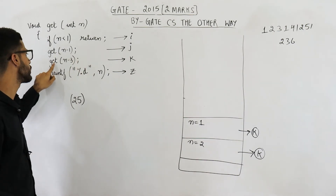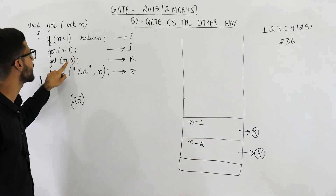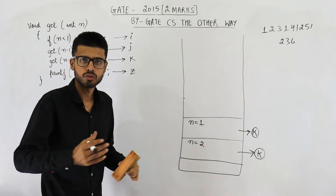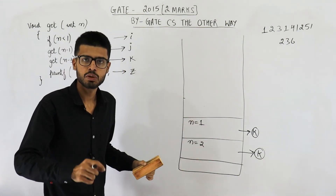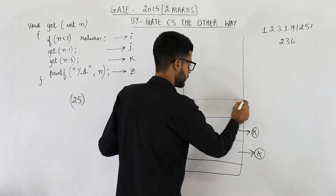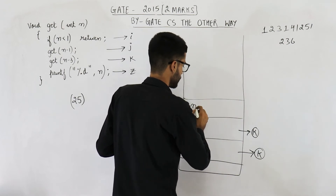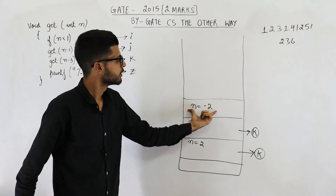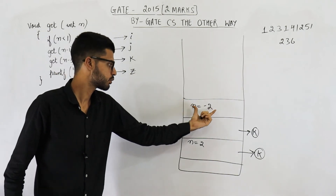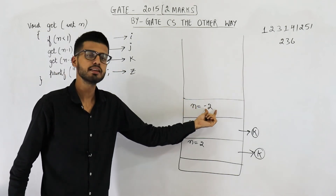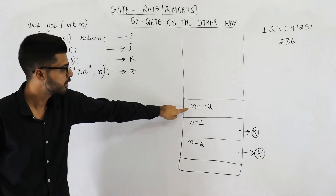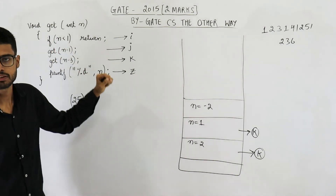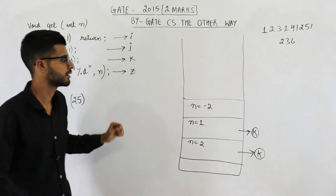That means from here. The next function to be called is get(n minus 3), that means get(1 minus 3). So the value that is passed is minus 2. So get(minus 2) is called. This value is less than 1, so this function will also return when it executes line i only.